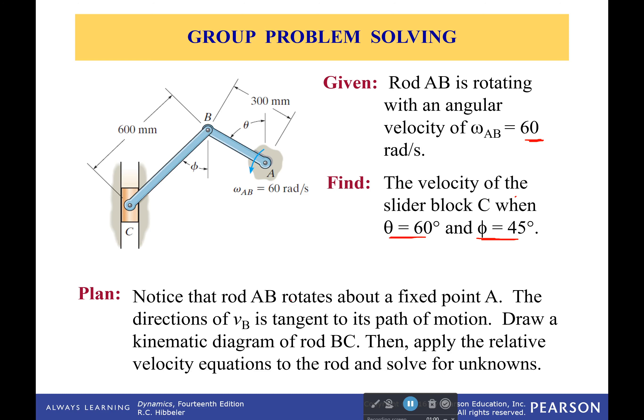Now I want you to notice that rod AB rotates about a fixed point, which means we know what the velocity of B is relative to A. So you just need to draw a kinematic diagram for BC and set up your vector equations. Now you've got theta to worry about here, you've got phi to worry about here, but I gave you some numbers for that, so it shouldn't be too terrible.